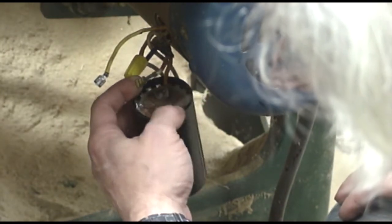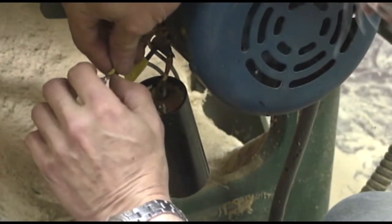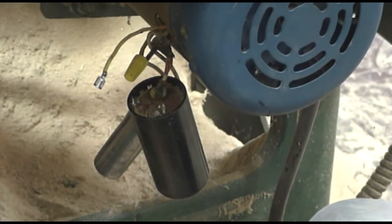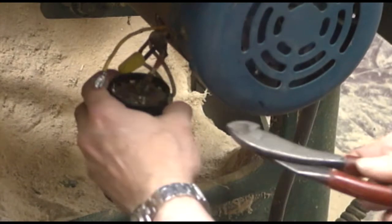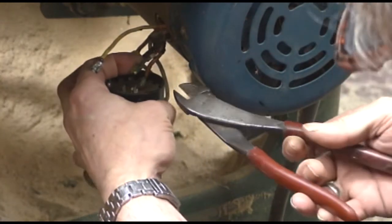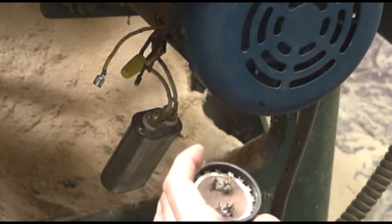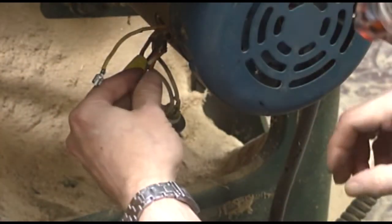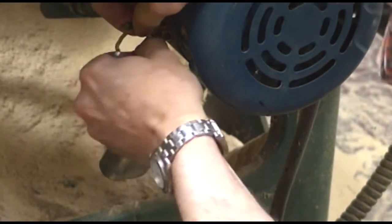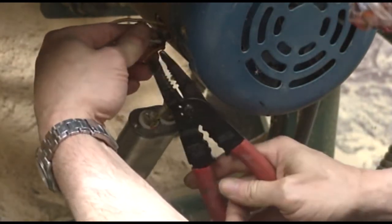So that's one side of the start capacitor. Now the other side is also soldered in place. So I'm going to cut it off and do the same thing, just solder the connector to it.